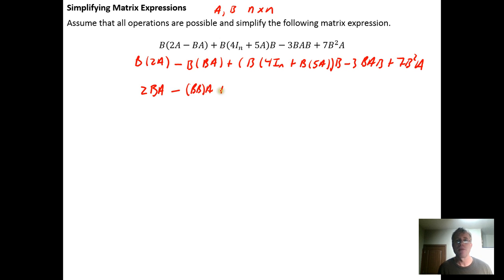Plus, here we have 4 times B times I_n. The 4 is a scalar and can be pulled to the front, so it's B times I_n. Plus, the scalar can be moved into the front position. Scalar multiplication is commutative, so we get 5BA. This is all still times the B that needs to be distributed into the parentheses.